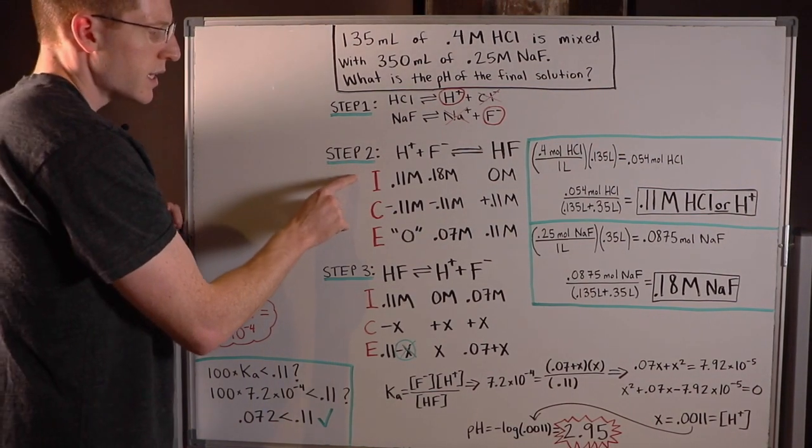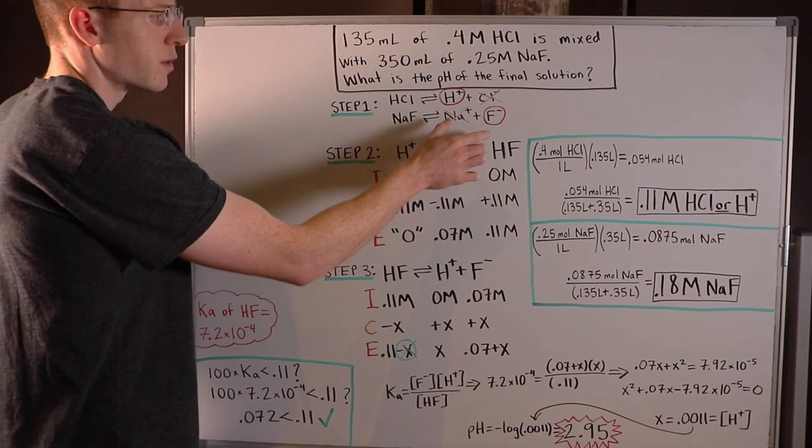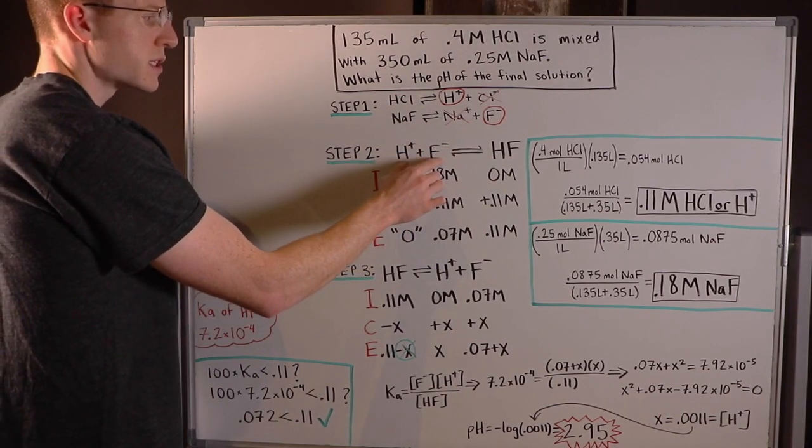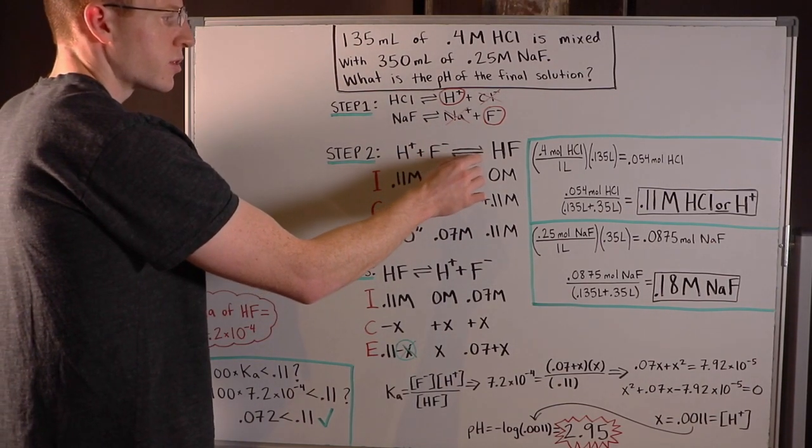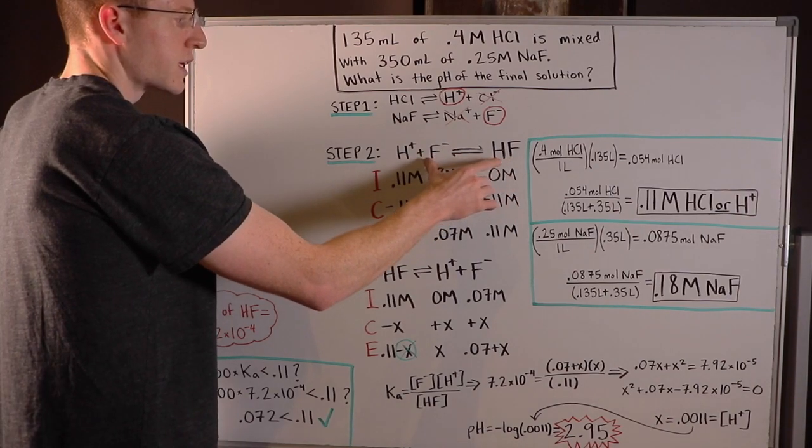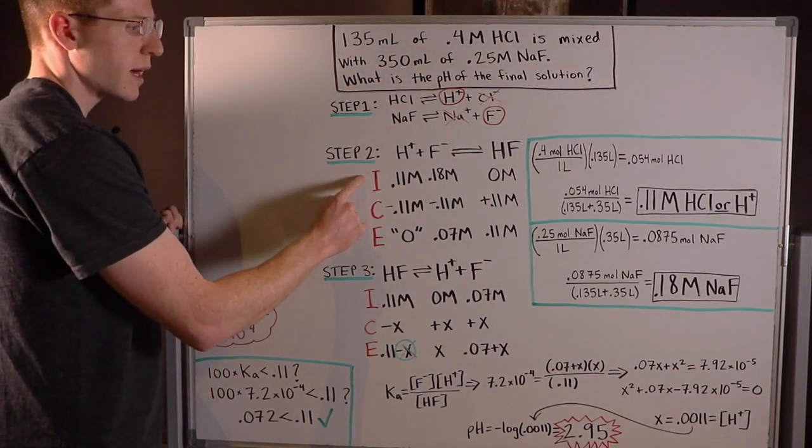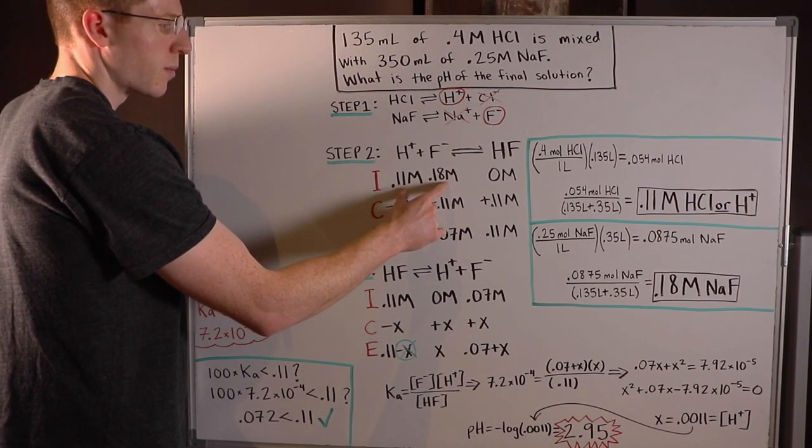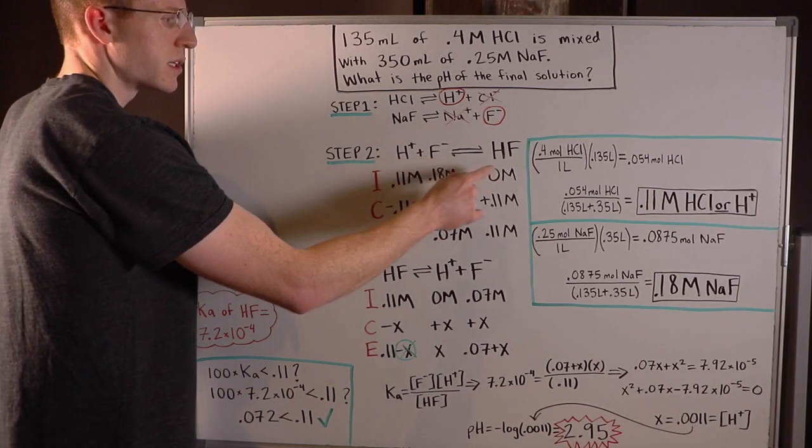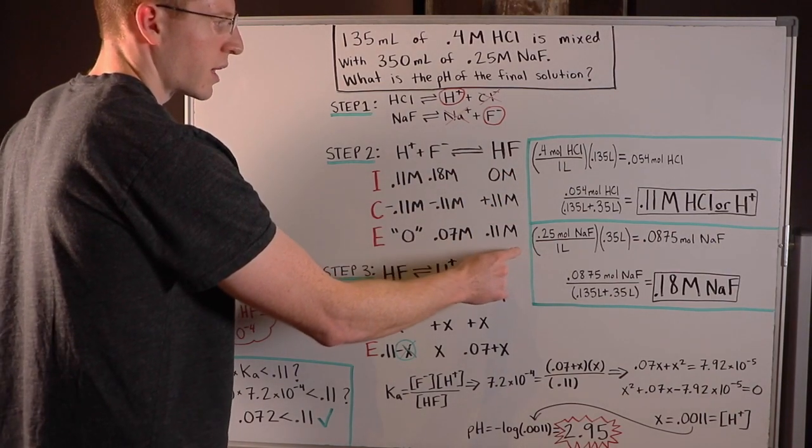So step two is to set up an ICE table for the reaction of those two ions, H plus and F minus. They're going to create HF, right? So now we have an equilibrium reaction here. In order to get the initial amounts in concentration or molarity of H plus and F minus, I had to do some calculations over here in the green boxes.